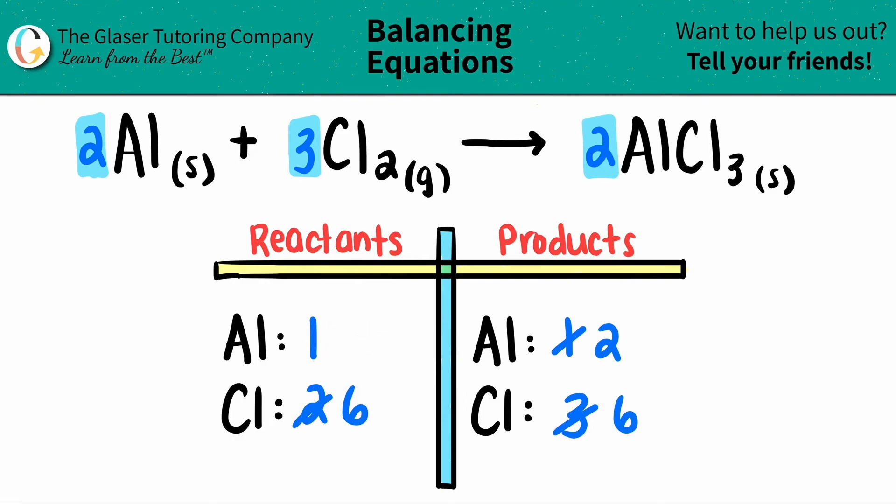Just to make sure we did it right, this clearly says that we have two aluminum. So I'm just going to cancel that out and put a two. And now all the numbers are balanced. I have two aluminum on both sides and six chlorines on both sides. So we're good. The balanced equation here is 2Al plus 3Cl2 will produce 2AlCl3.